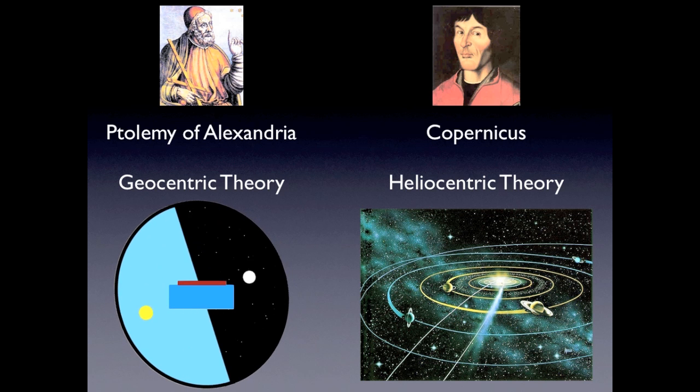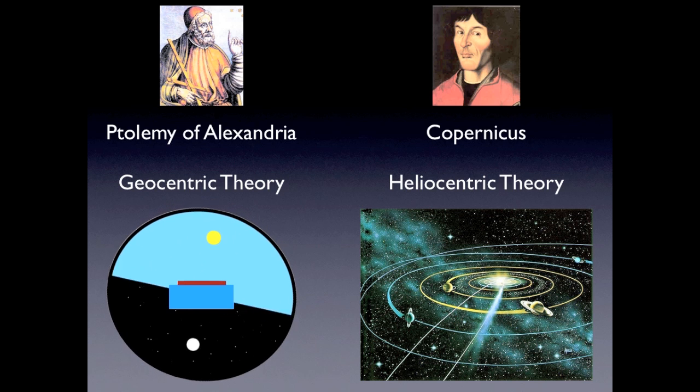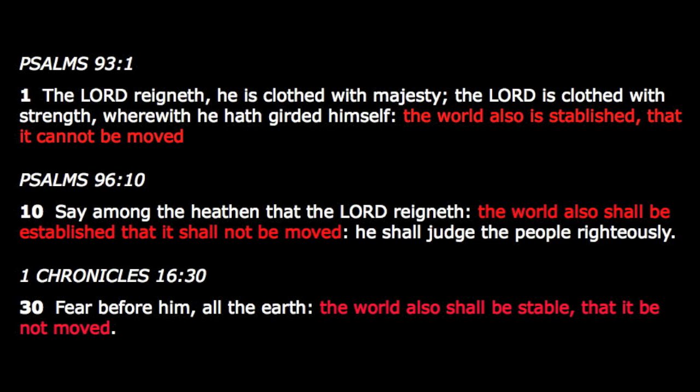Unfortunately for Galileo, his ideas concerning Copernican heliocentric theory were seen as heresy by the church, and for good reason. The Bible, where all Christian authority is derived, clearly states that the earth is unmoved and unmovable.